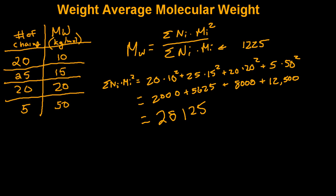Now it's just a matter of division. This will be 28125 over 1225, and that's roughly equal to 23 kilograms per mole. It's the same as what we found using the first equation.